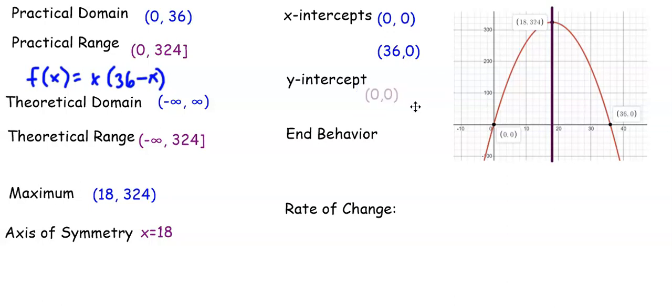The y-intercept is 0, 0, which is telling us that when the area is 0, the length would also be 0.